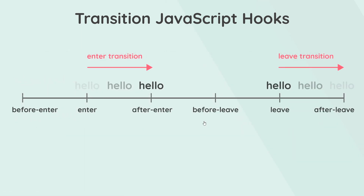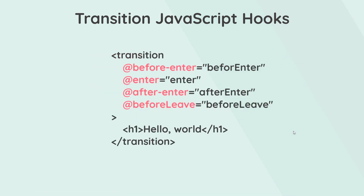Let me show you a quick timeline of events. We have the enter transition where something fades in, and the leave transition where something fades out. The before-enter hook fires just before the transition starts. The enter hook fires as the item starts transitioning in. After-enter fires once it's finished transitioning in. Then before-leave fires just before it leaves, leave fires as it starts to leave, and after-leave fires once it's fully left.